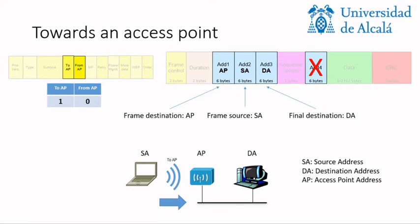Let's start with the towards-an-access-point direction. Imagine we have a source mobile device, a destination fixed device, and an access point. In this situation, the to-AP bit will be set to one, while the from-AP bit will be set to zero. The first address will always be the next step in the Wi-Fi communication — so the next step is the access point, not the final destination. In Ethernet we know the next step from the port, but here we indicate it as an address.